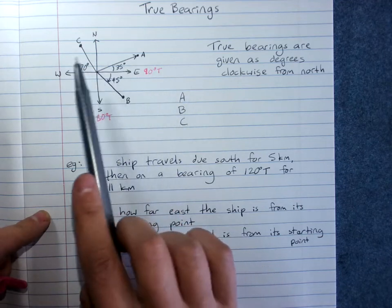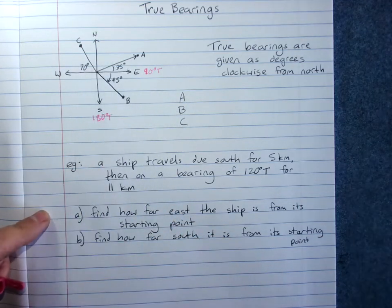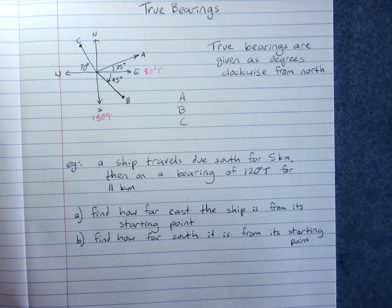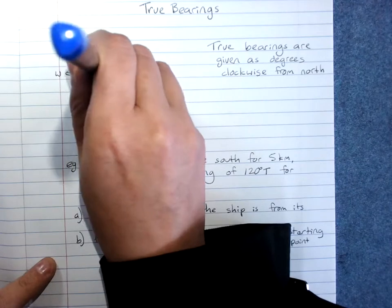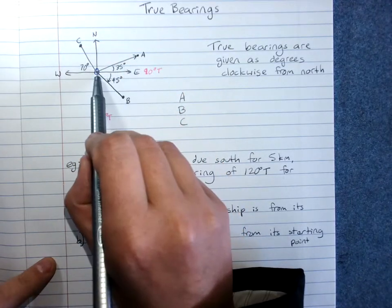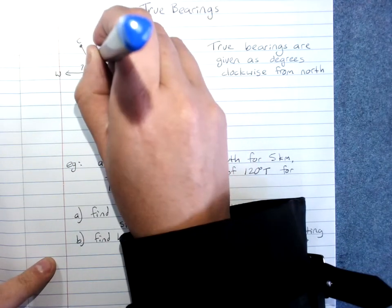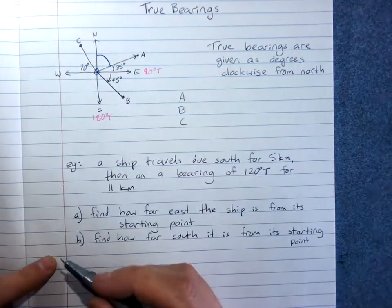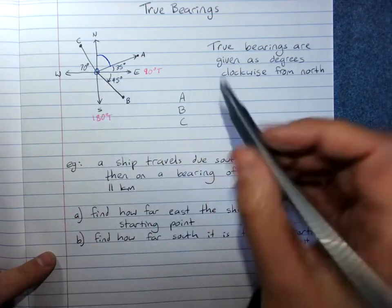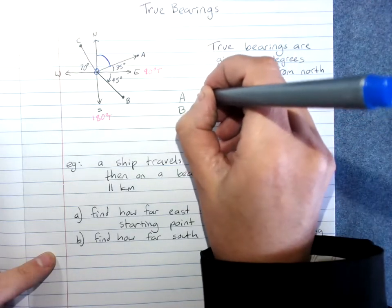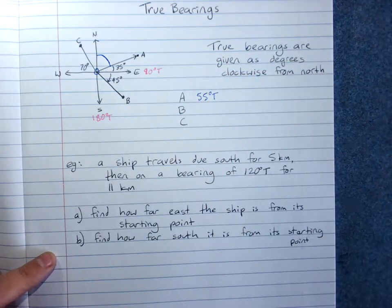Angles will be marked and we will be asked to give a particular bearing as a true bearing. So the bearing, if you're standing here to get to A, is the angle around clockwise from north. That is 90, take away 35, so the bearing of A is 55 degrees T for true.